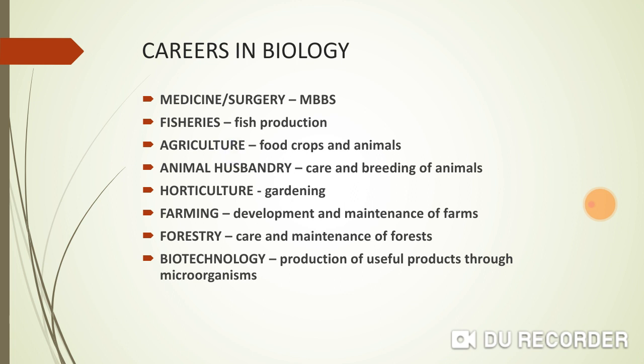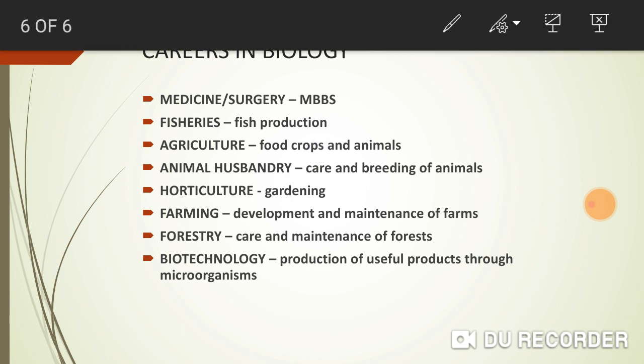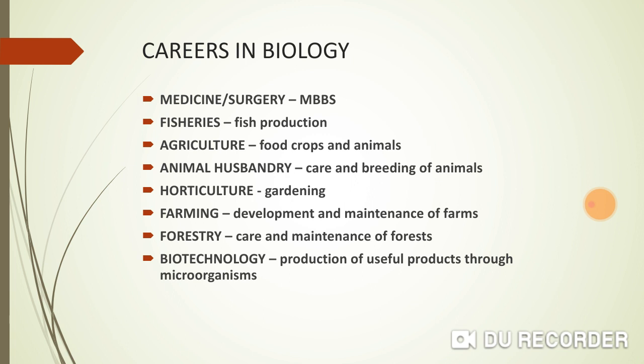Agriculture involves food production through crops and animals. Pakistan is an agricultural country, and around 70% of people are related to growing crops and raising animals to get food. Animal husbandry is the care and breeding of animals — farmers keep cows and buffaloes, breed them and care for them.